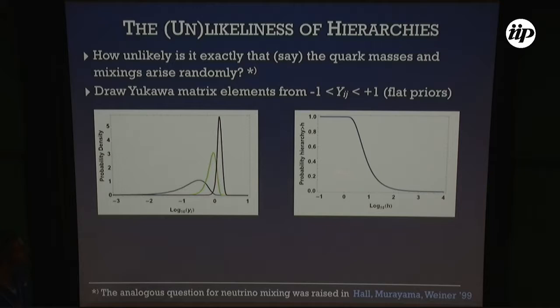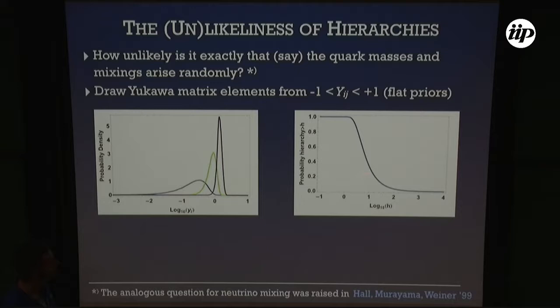Plotting the cumulative distribution for the logarithm of the hierarchy, you can read off that the probability of having a hierarchy of 10 between the largest and smallest eigenvalue is about 20%. For a hierarchy of 10³ the probability is essentially zero — not strictly impossible, but basically zero.